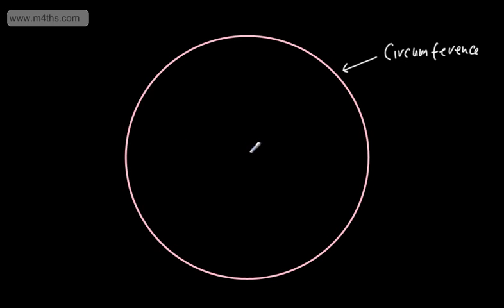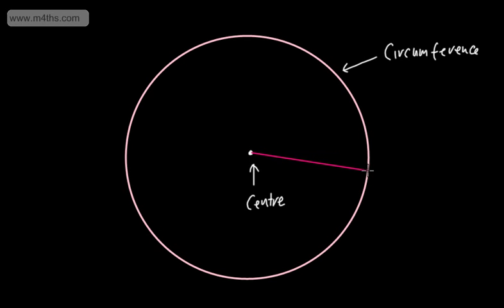I'm now going to put on the centre of the circle. So we can say this is the centre. I'm now going to draw a line from the centre to the circumference. If we do that, we have a radius. So this line right here is called a radius.